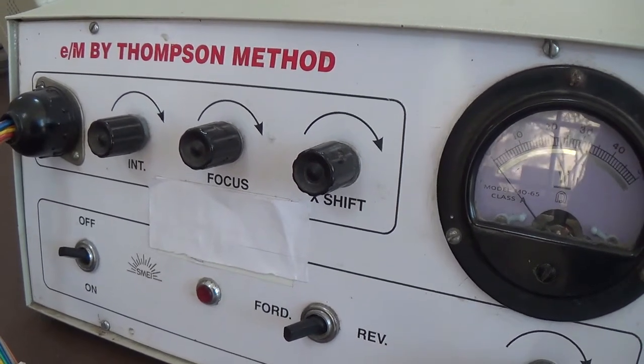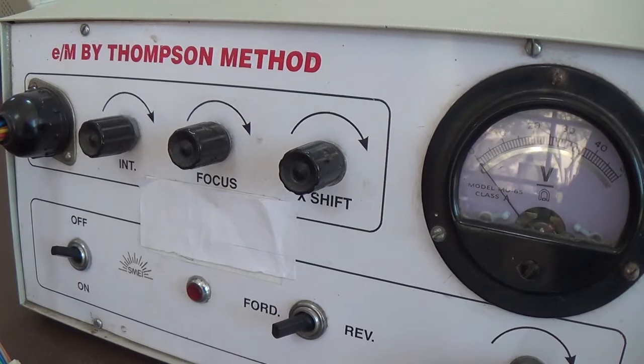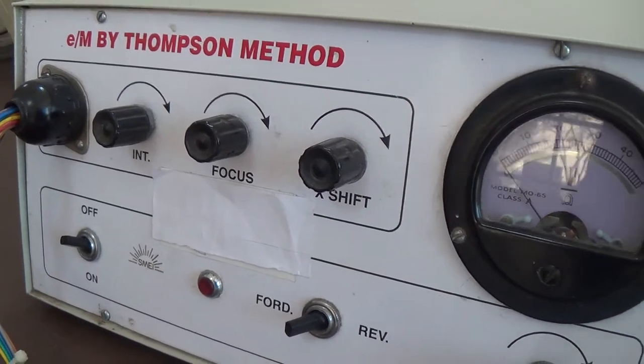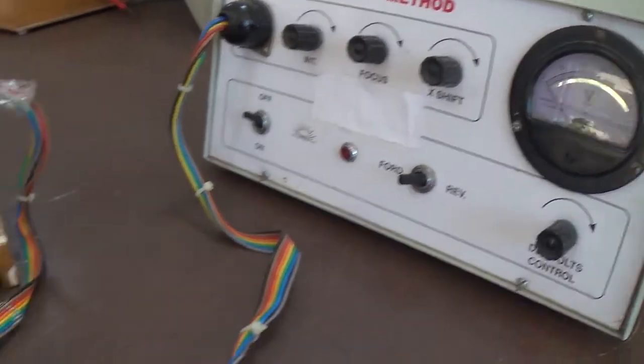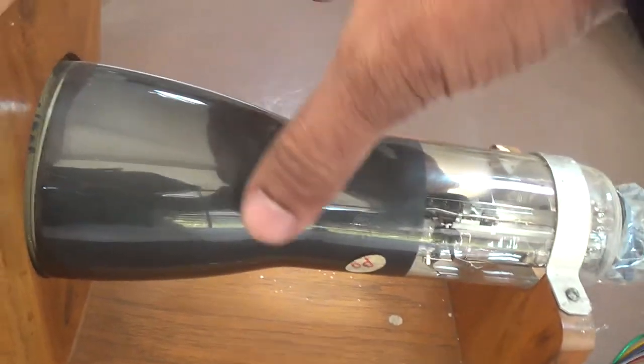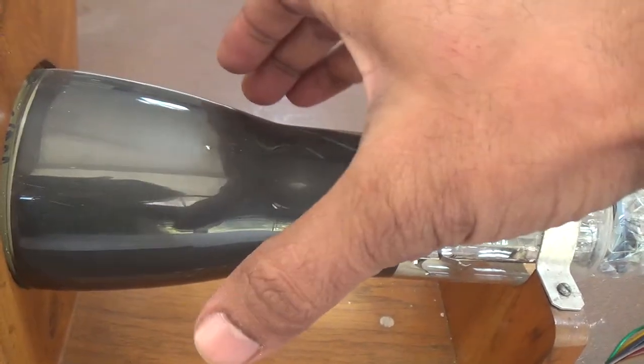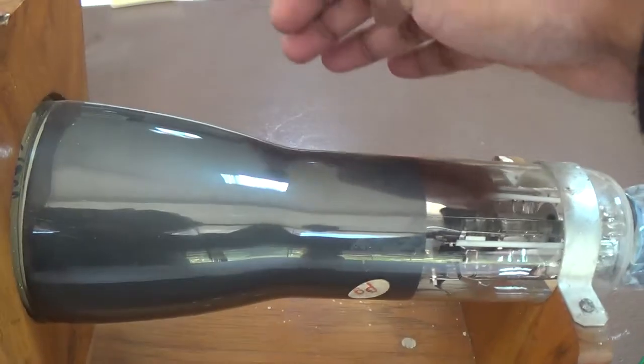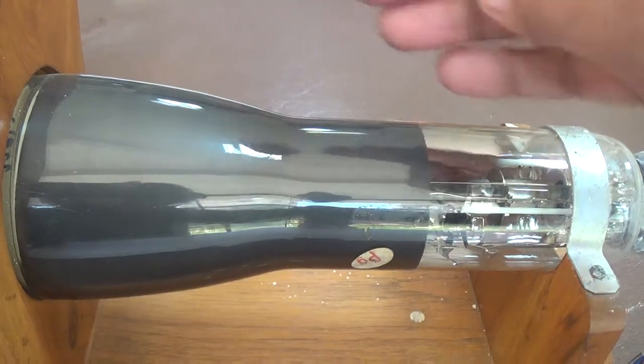Okay, to determine the value of specific charge or charge to mass ratio by the Thompson method. As I told in earlier videos, we require two methods. In one, we put two external coils here known as Helmholtz coils, one on this side and second on the other hand, right?